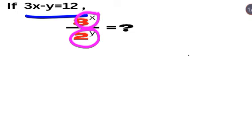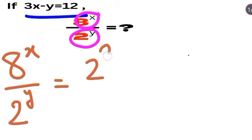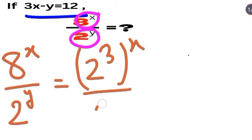We can write 8 raised to the power x divided by 2 raised to the power y. We will write 8 as 2 raised to the power 3, giving us 2 raised to the power 3, all raised to the power x, divided by 2 raised to the power y.